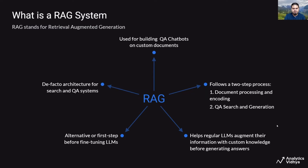What is a RAG system? RAG stands for Retrieval Augmented Generation. It is typically used for building Q&A question answering chatbots on custom documents. It follows a two-step process.